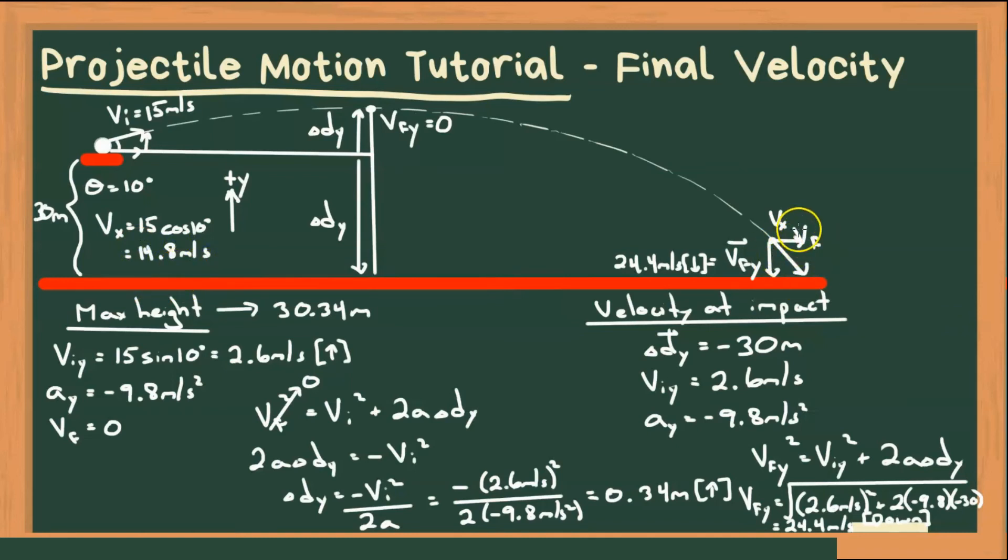All right, so let me redraw this triangle here. So we have our final velocity here. Then we have it as being the sum of its components, Vx, and V final in y. So to then solve for our final velocity or velocity at impact, we need to use Pythagorean theorem. And then we need to also find the angle theta. All right,